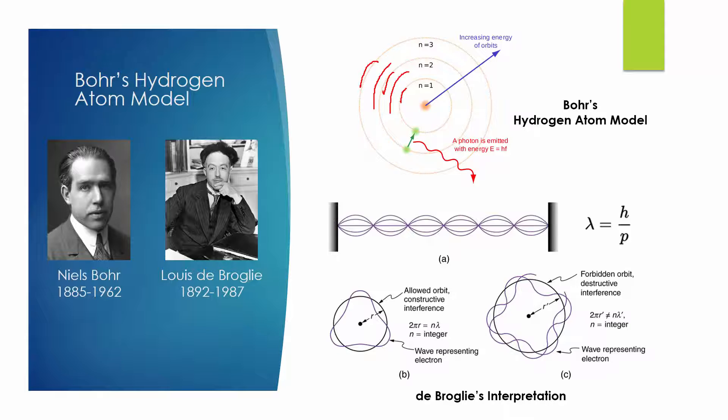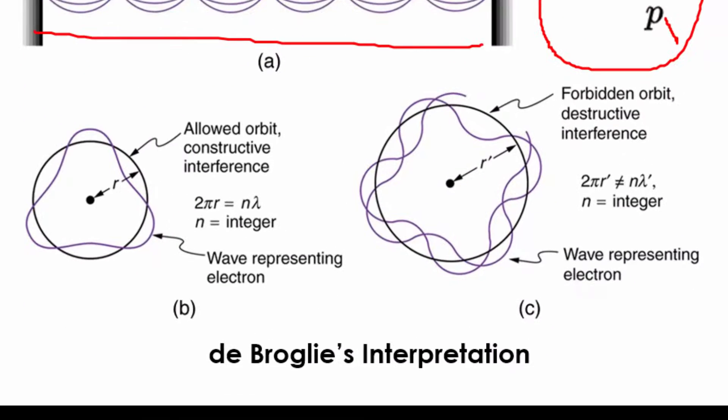The de Broglie wavelength is the wavelength lambda associated with the massive particle and is related to its momentum p through the Planck constant h. Based on de Broglie's matter wave theory, electrons' orbits must meet the standing wave condition. The orbit's length is an integer multiple of the electron's wavelength. This is represented in these two pictures. The first picture shows that a constructive interference makes the orbit possible and stable. This happens when the orbit length equals an integer n times electron's wavelength. n could be 1, 2, 3, and so on. The second picture shows that when this condition is not met, destructive interference will make the orbit unstable or not even exist.